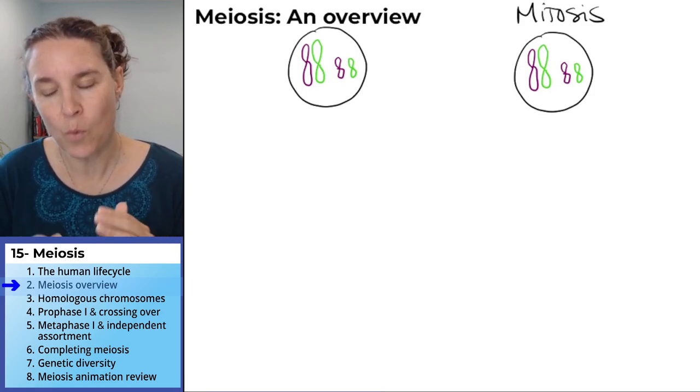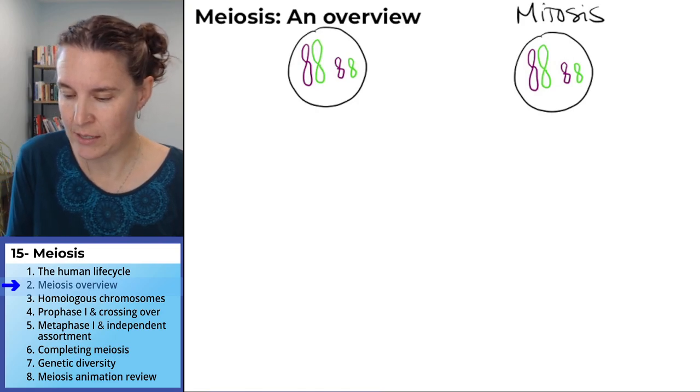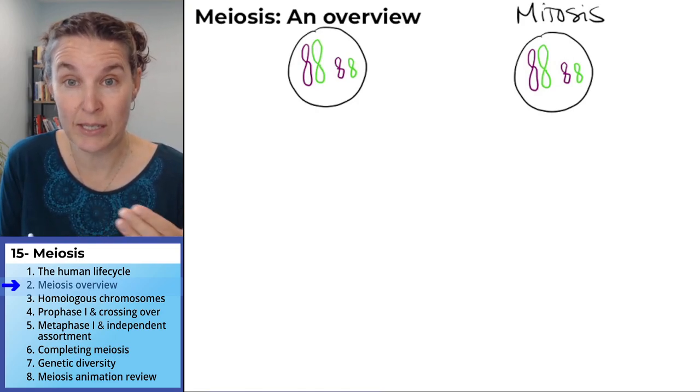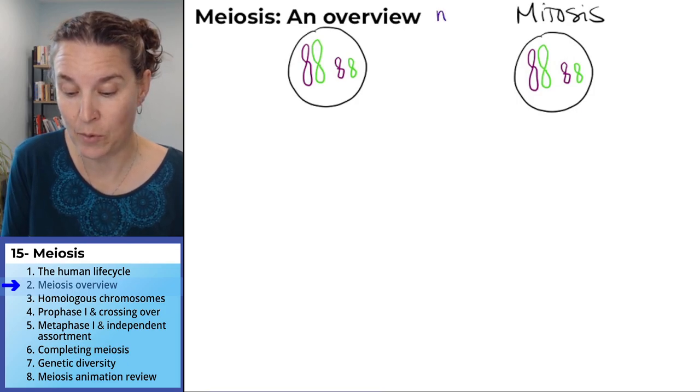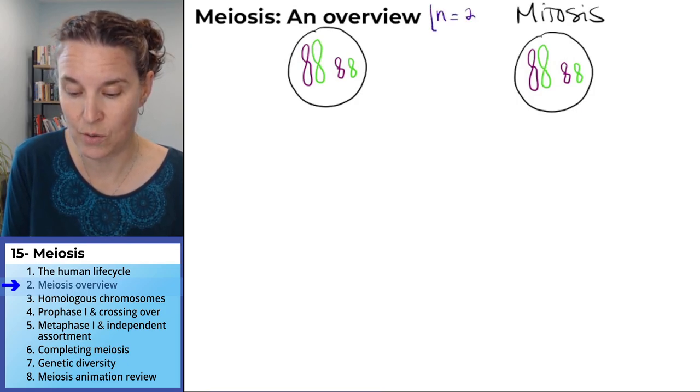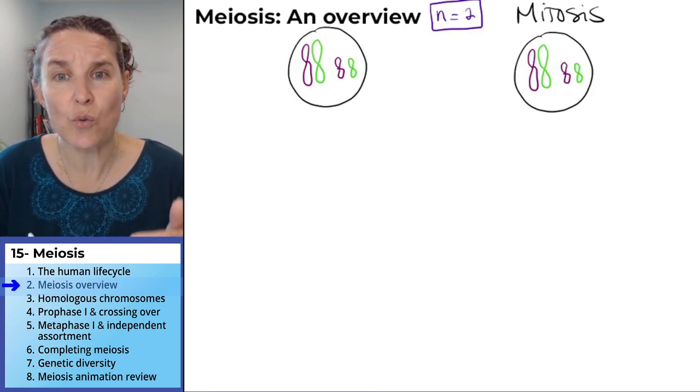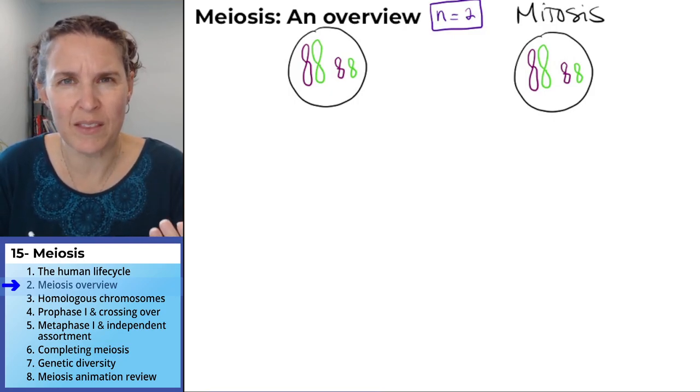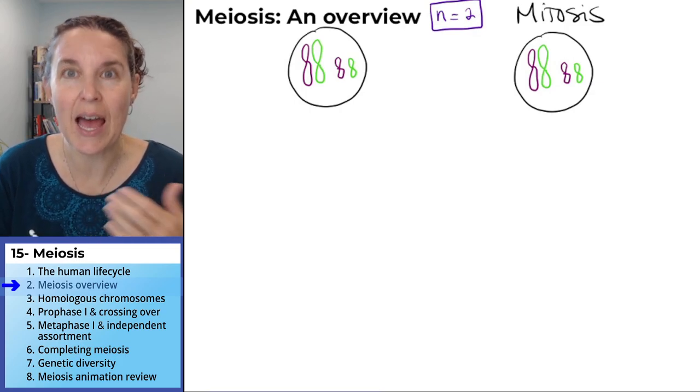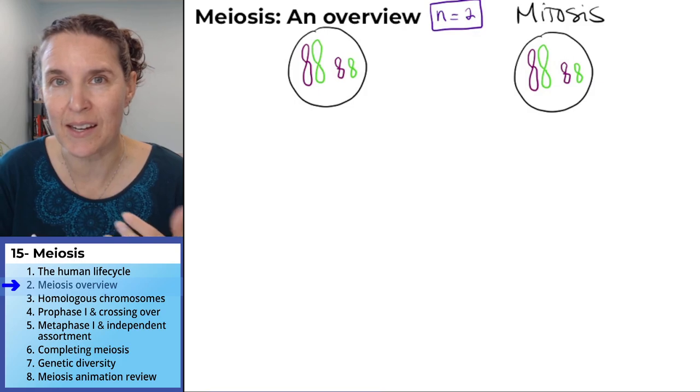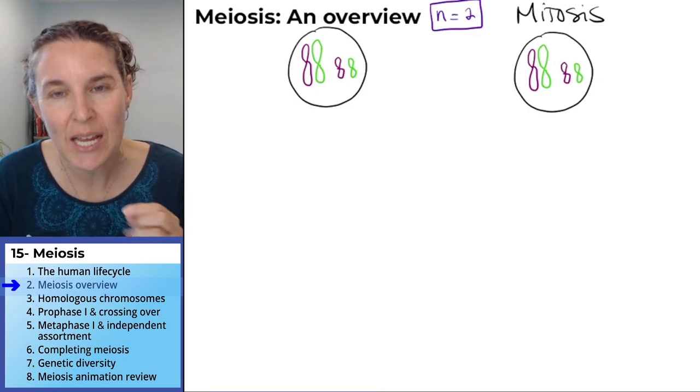But I want you to remember what I've drawn here is essentially a diploid cell where the haploid number is two. I don't know if you remember that we can describe the haploid number by saying n. A haploid cell is one n, a diploid cell is two n. So the haploid number is significant.